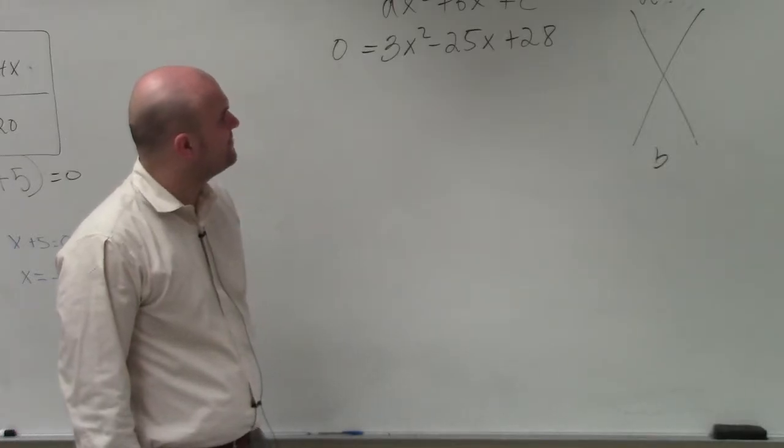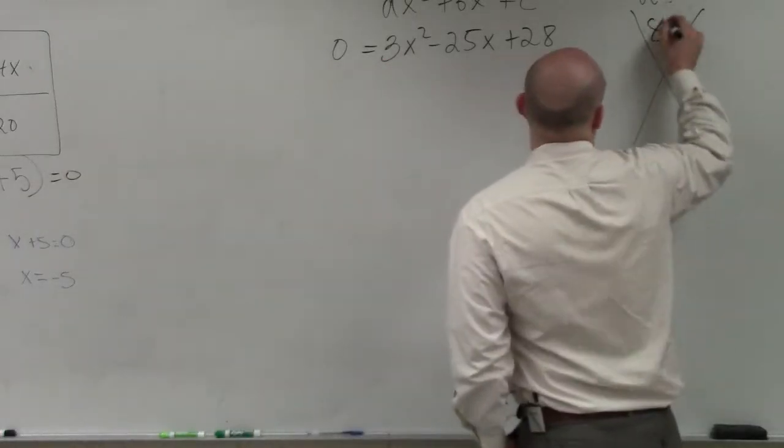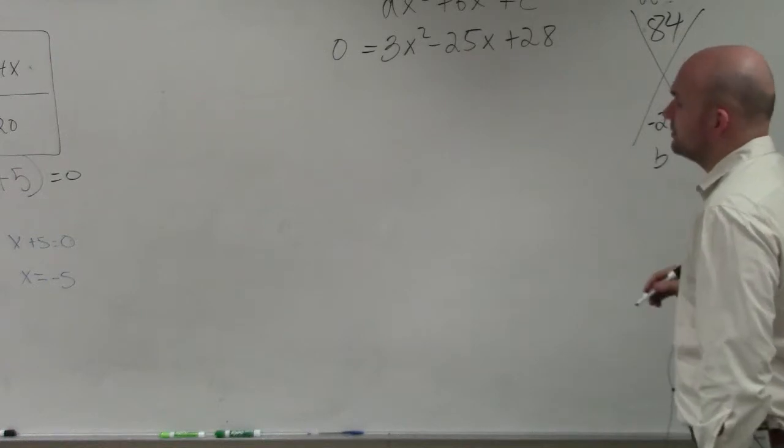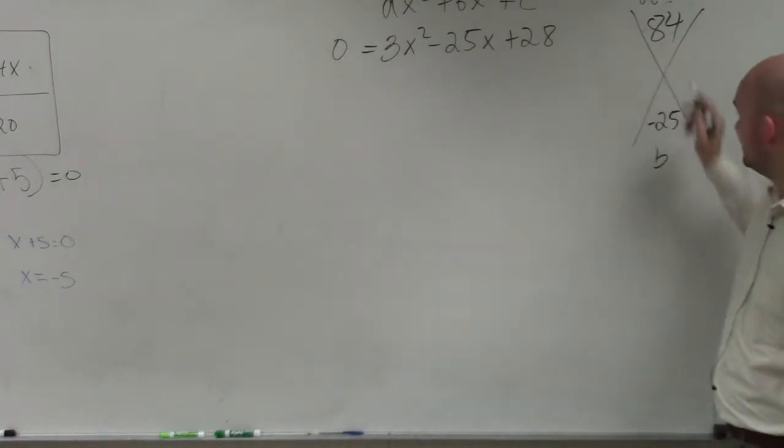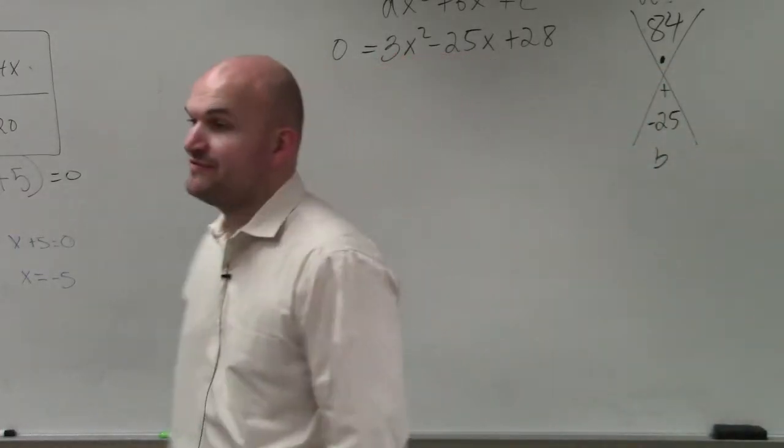So that becomes 56, 70, 84. So you have 84 and negative 25. That is your a times c. That is your b. What we need to do is determine what two numbers multiply to give you 84, but then add to give you 25.